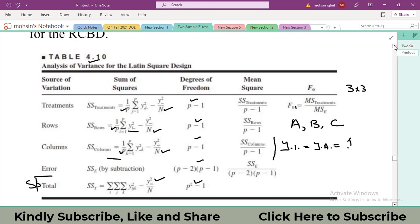So it is the sum of first treatment. You will have to sum up all of the values that are related with the A. Then y dot 2 dot, take the sum of all the values associated with the B. Repeat the same step for the third level C.